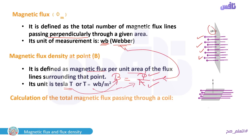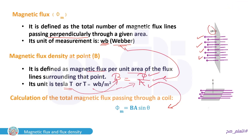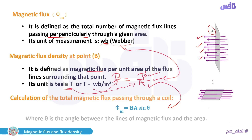To calculate the total magnetic flux passing through a coil, from the equation above we can write: Φ = BA sin θ. One student memorized it as 'Φ equals BAS' — a nice way to remember it. Φ = BA sin θ, where θ is the angle between the lines of magnetic flux and the area.